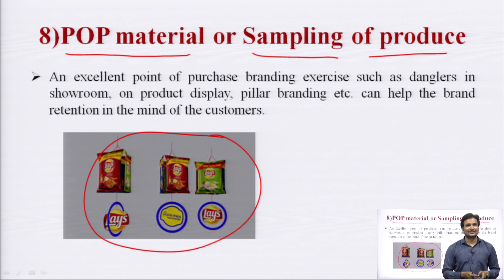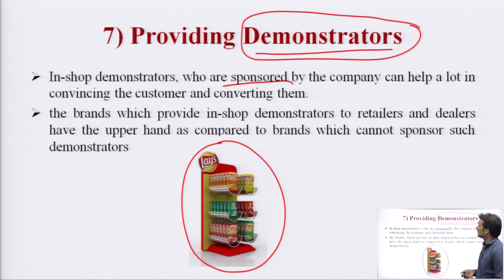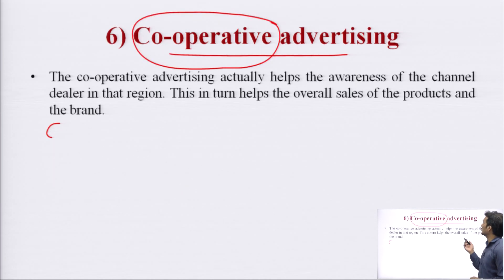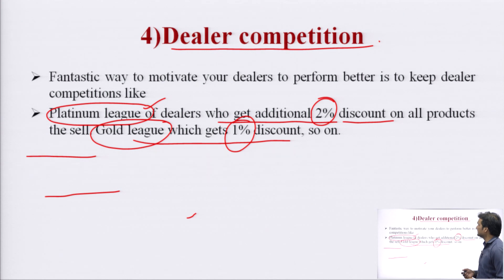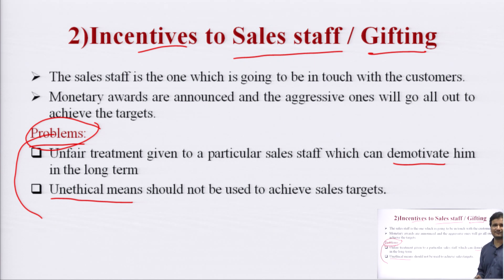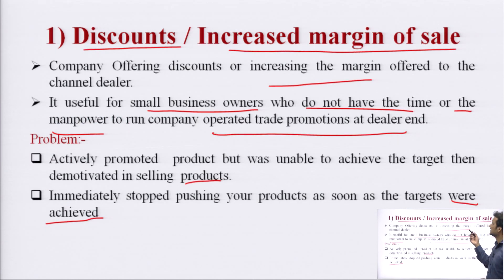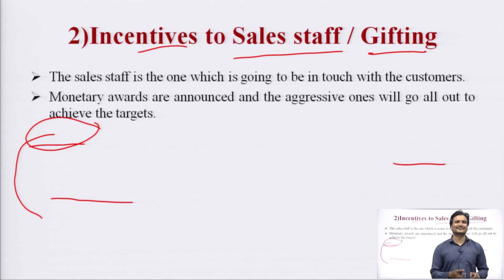So, we studied all 8 types of trade promotion: discount and increase margin of sales, incentives to sales staff, coupons and rebates, dealer competition, exhibition and trade shows, cooperative advertising, providing demonstration, and POP material or sampling of product. In our previous video, we also discussed trade promotion, its nature, and its objectives.